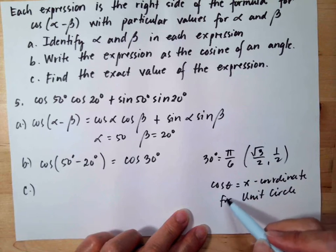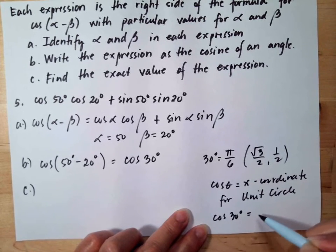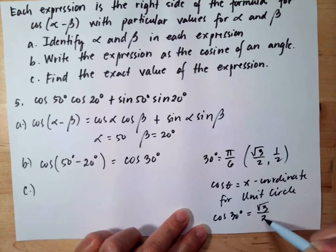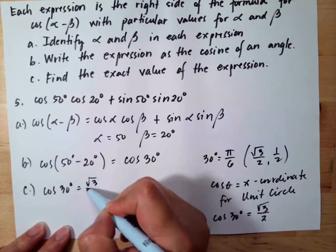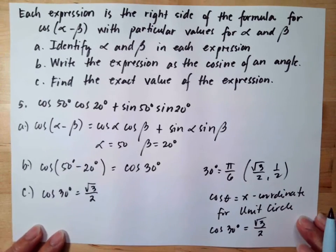So meaning, your cosine 30 degrees is equal to square root of 3 over 2. So our answer here, cosine 30 degrees is square root of 3 over 2.